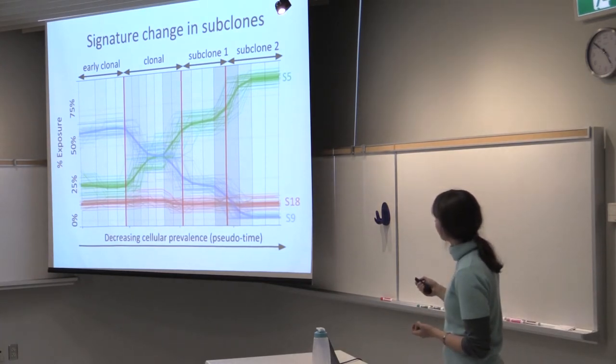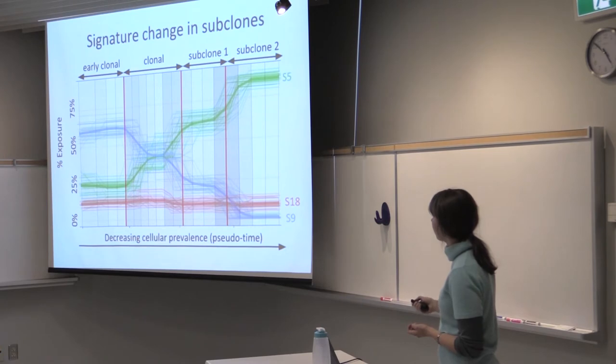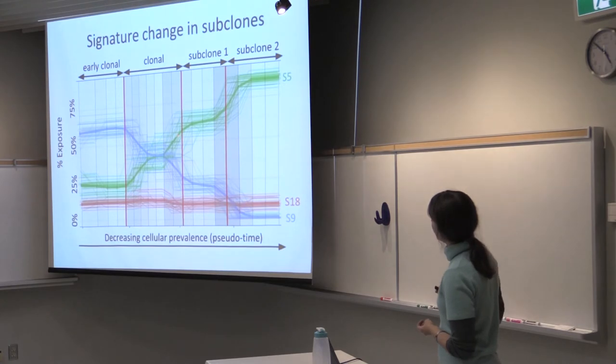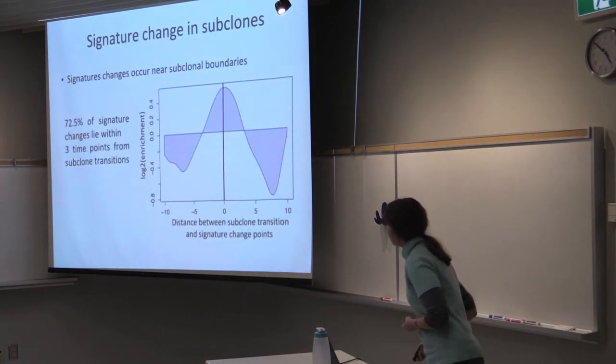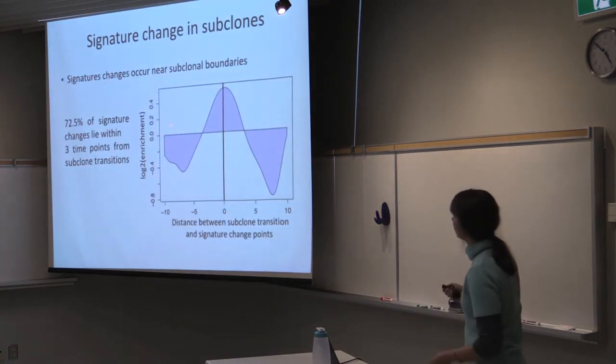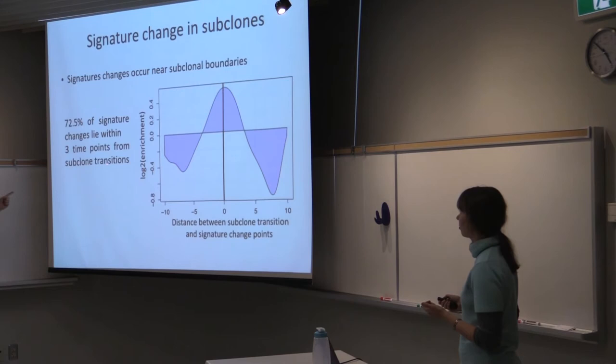So here, we have denoted clonal sub-clonal boundaries in thick red lines, and we see that the signatures change roughly around those red lines. And to be a bit more concrete, 70% of signature changes lie very close to sub-clonal boundaries, typically within 3 time points.